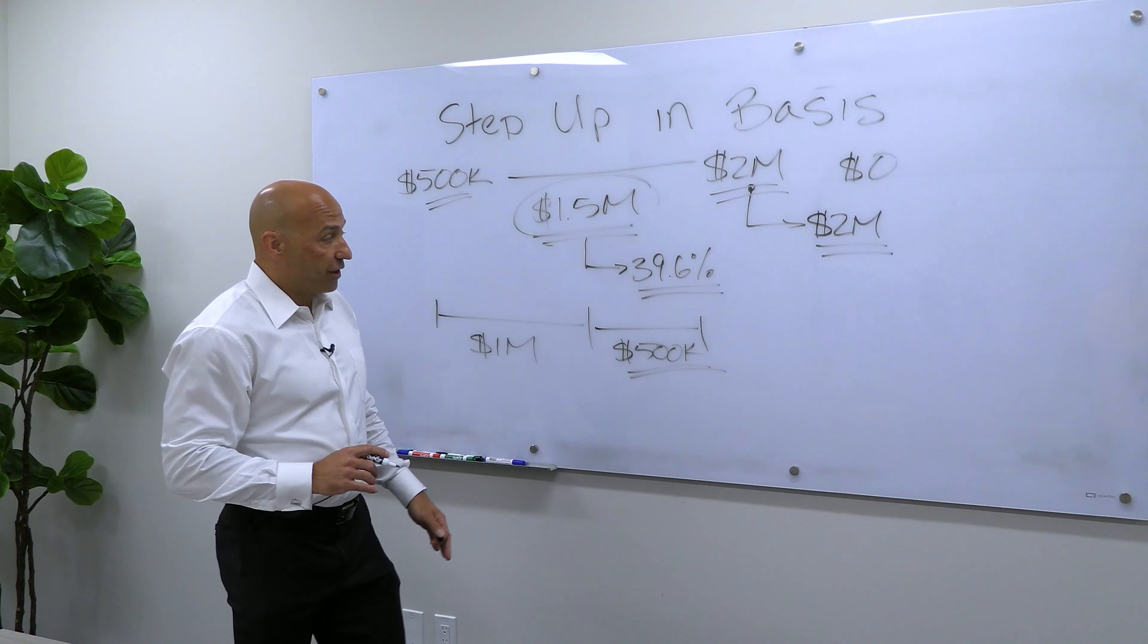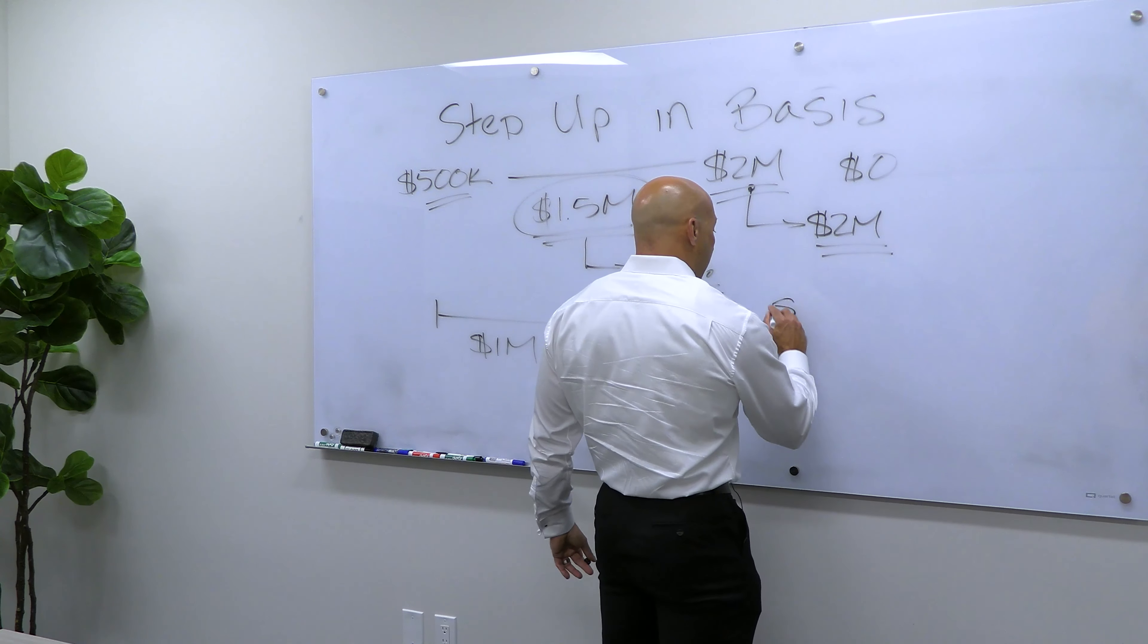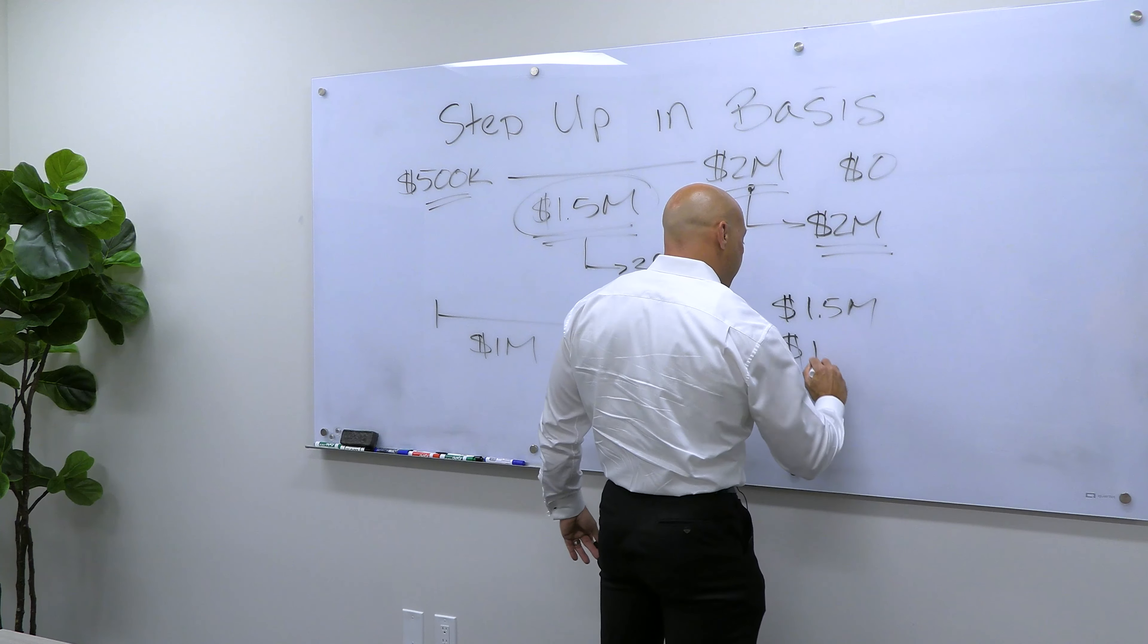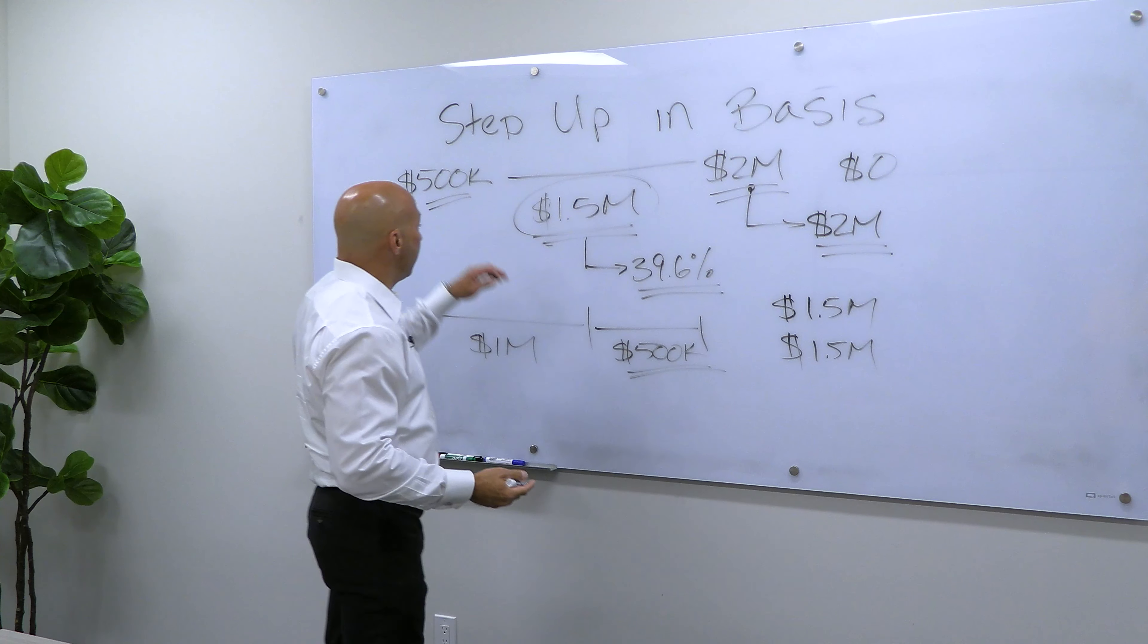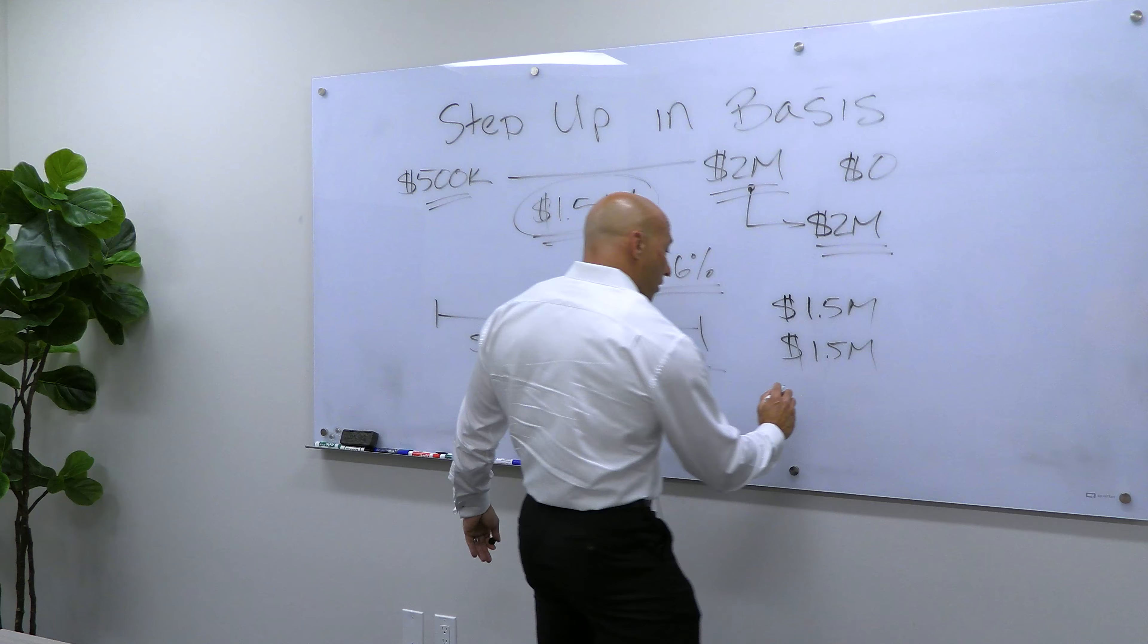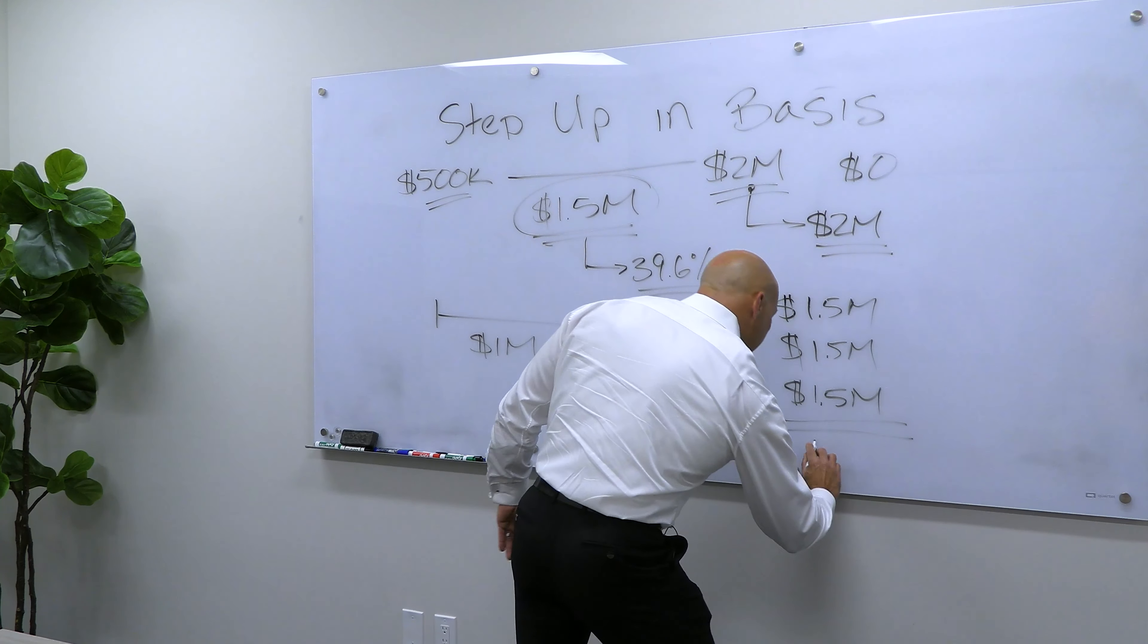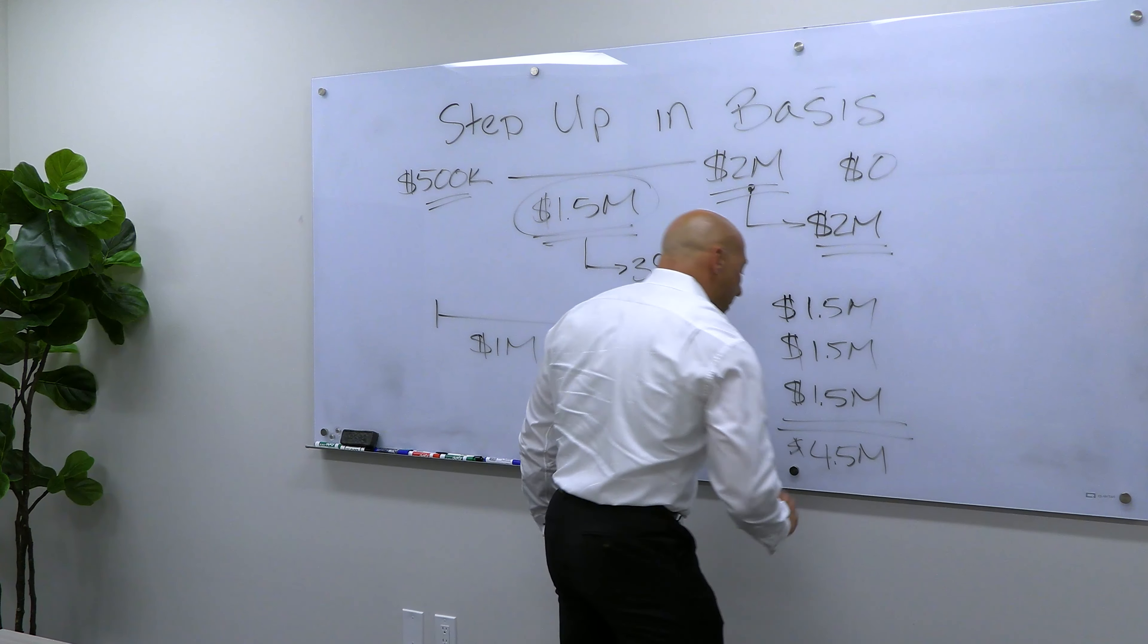So one more thing to think about is that we're talking about one property, but let's assume that I own two properties, both with a gain of $1.5 million. And I own a stock portfolio that I put $500,000 into that's now worth 2 million, which is another $1.5 million of potential capital gains. That's $4.5 million in cap gains.